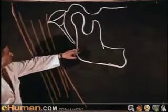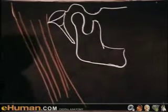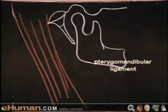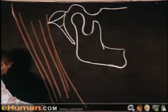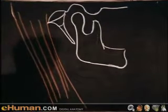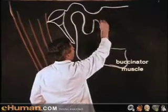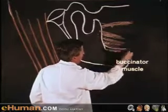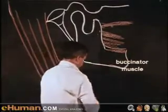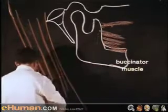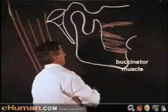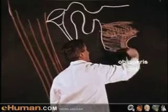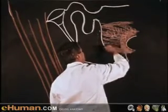Coming down on the inner surface of the mandible from the medial pterygoid plate is the pterygomandibular ligament. Coming off the front of this ligament is the buccinator muscle. The buccinator comes forward from the ligament, its fibers extending forward and also from the alveolar margin of the mandible, until they reach the region of the mouth, where the fibers interdigitate with the orbicularis oris muscle.